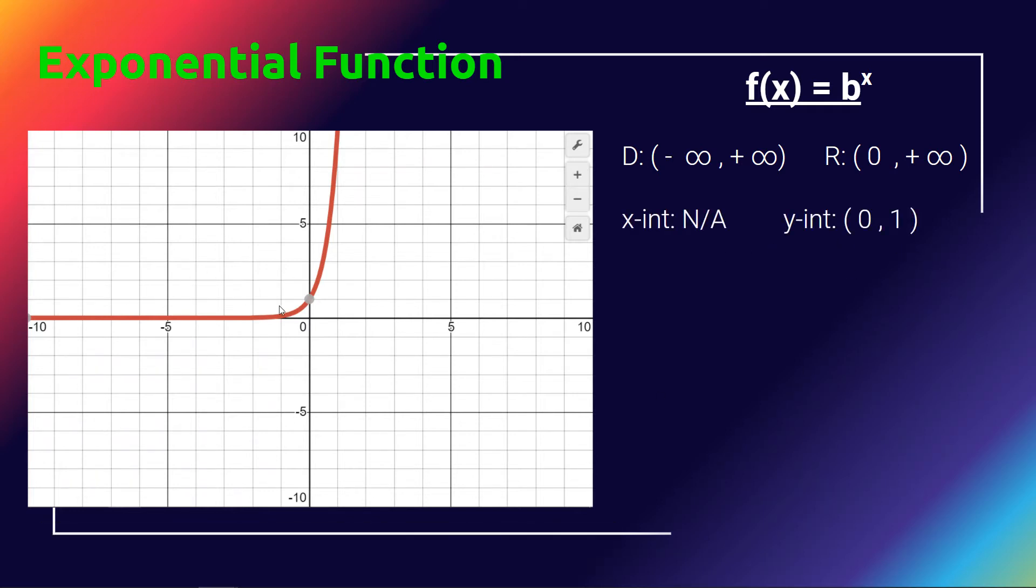Because it never touches the x-axis, there is no x-intercept. The y-intercept is a very important point on all exponential functions. It is the one thing that every exponential function will always have in common: when x is 0, y will always be 1. No matter which exponential function we have, whatever the base is, it will always go through the point (0, 1).